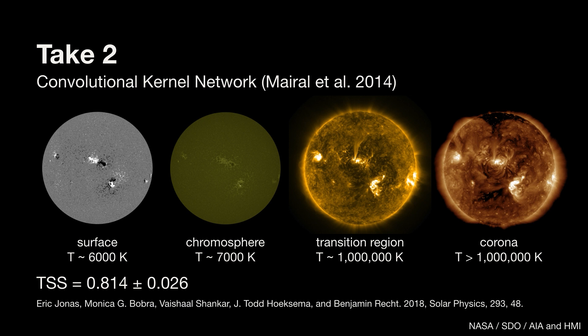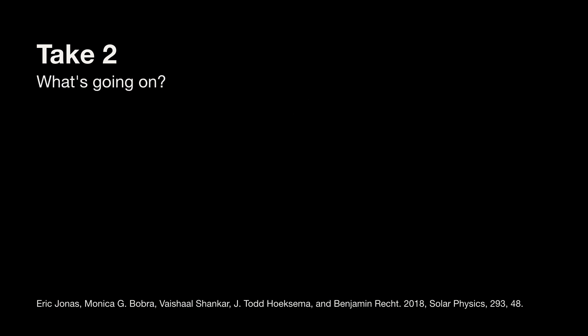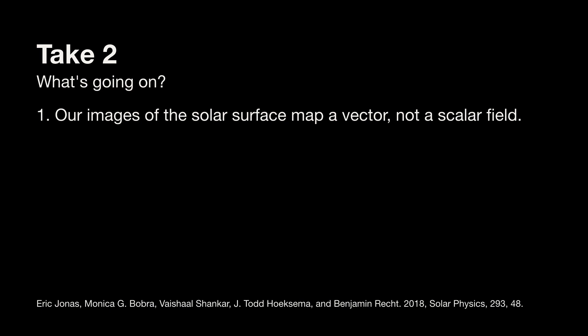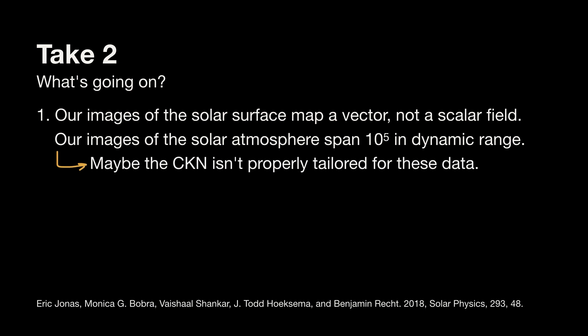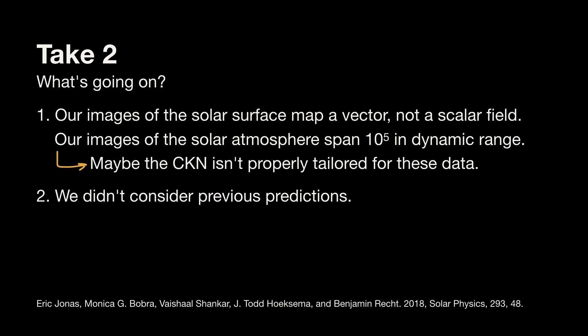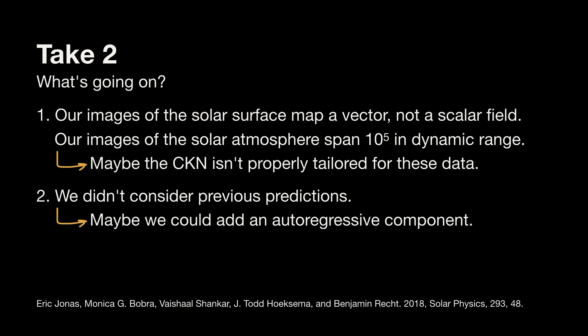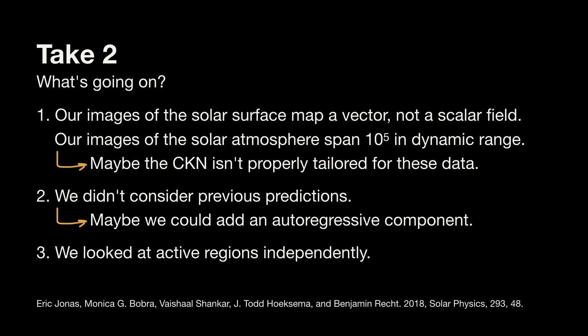This really got us thinking — if we're using all these extra data and didn't get a massively better result, what's going on? Well, our images of the solar surface map a vector field, not a scalar field like intensity, and our images of the solar atmosphere span five orders of magnitude in dynamic range — really different from typical everyday images. Maybe the CKN isn't properly tailored for these data. Additionally, we didn't consider previous predictions when making a subsequent prediction, so maybe we could add an autoregressive component. And finally, we looked at all active regions independently — but maybe all the active regions on the disk at any given time are influencing one another. This concept is called sympathetic flaring, where a flare in one active region triggers a flare in another.